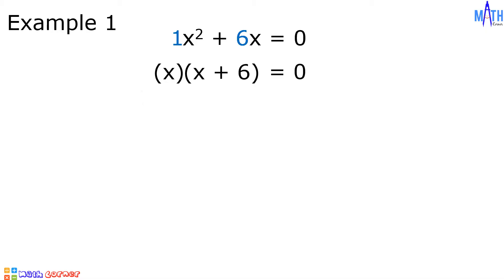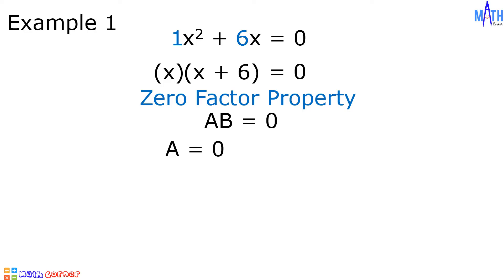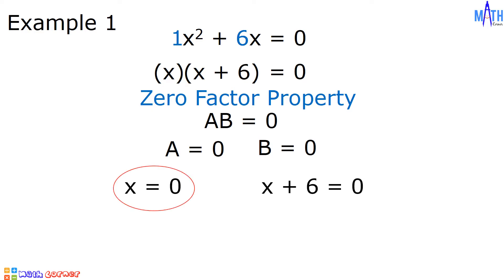After factoring, we will apply the zero-factor property. In zero-factor property, if a times b is equal to zero, then a is equal to zero, or b is equal to zero, or both a and b equal to zero. Applying this in x times x plus 6 is equal to zero, we have x is equal to zero, and x plus 6 is equal to zero. To solve for x in x plus 6 is equal to zero, we add negative 6 to both sides: x is equal to negative 6. Therefore, the values of x are zero and negative 6.